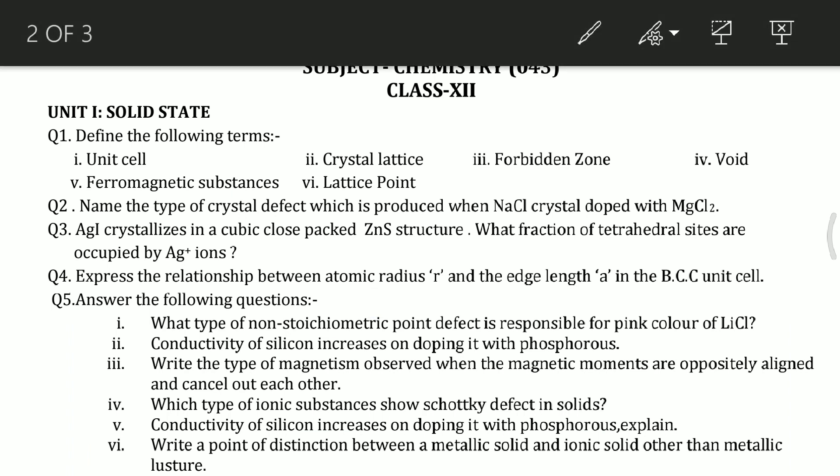First of all, our question on solid state: define the following terms. You should know all these definitions because questions can be asked in the examination, whether it's 1, 2, or 3 mark questions. So what can be asked in the first chapter: first is unit cell, second is crystal lattice, third is forbidden zone, fourth is void, fifth is ferromagnetic substances, and sixth is lattice point. You should know all these definitions. These can be asked as one mark questions.